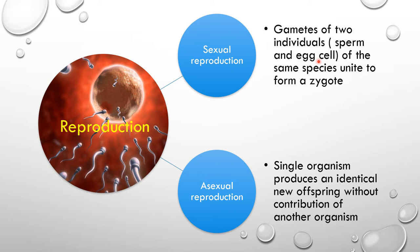In sexual reproduction, a sperm cell and an egg cell unite to form a zygote, and this zygote develops into the new organism. In asexual reproduction, there is no need for two organisms to produce a new offspring. Instead, one matured organism can produce new offspring that have identical features and characteristics to the parent organism. These are the two main types of reproduction found in plants, animals, and microorganisms.